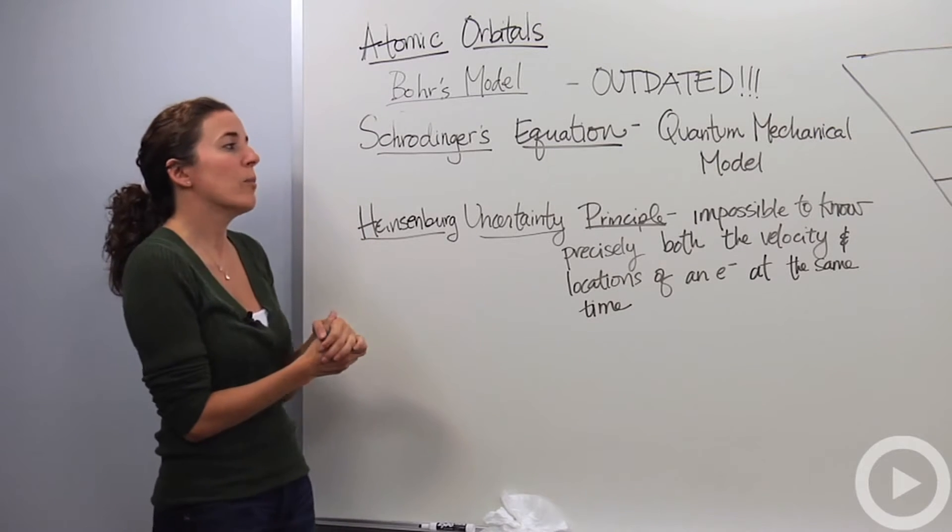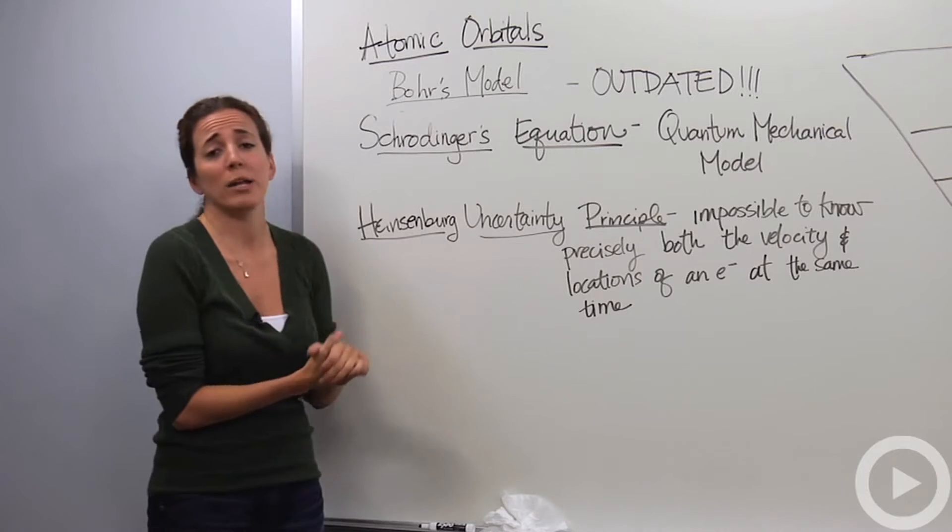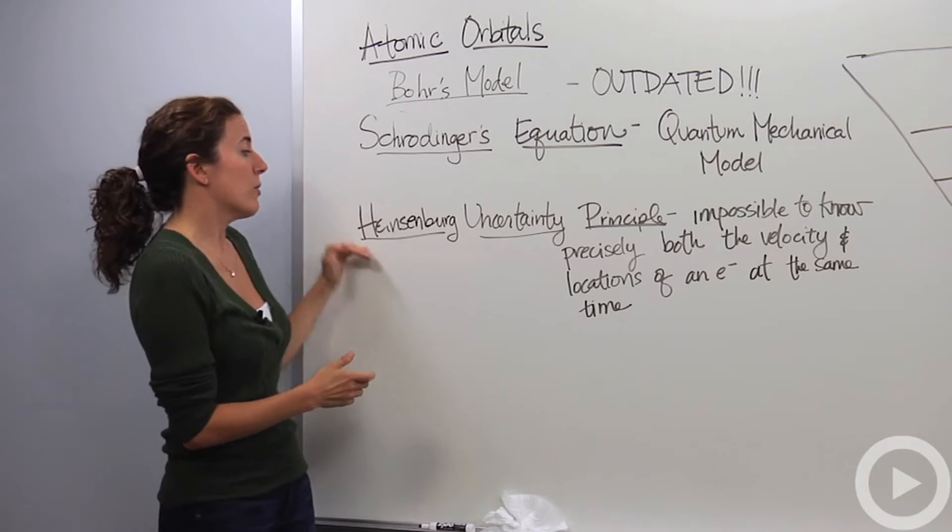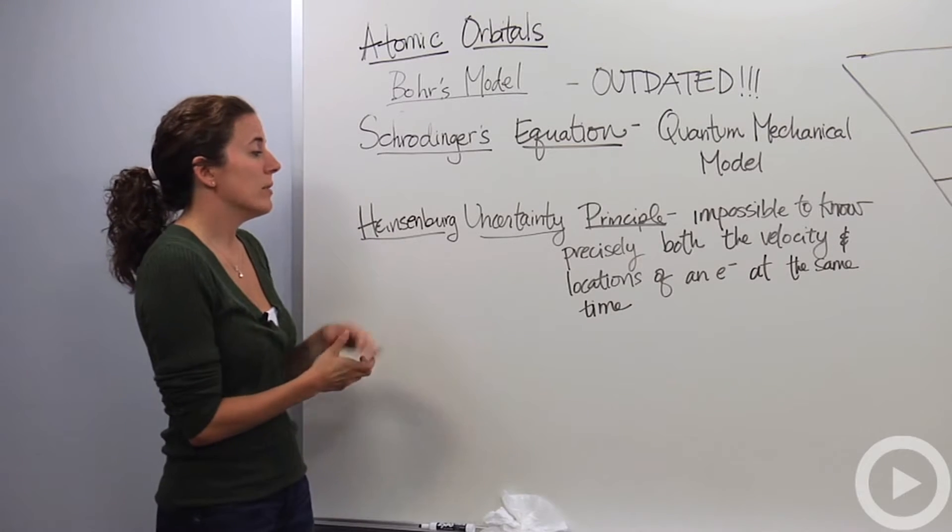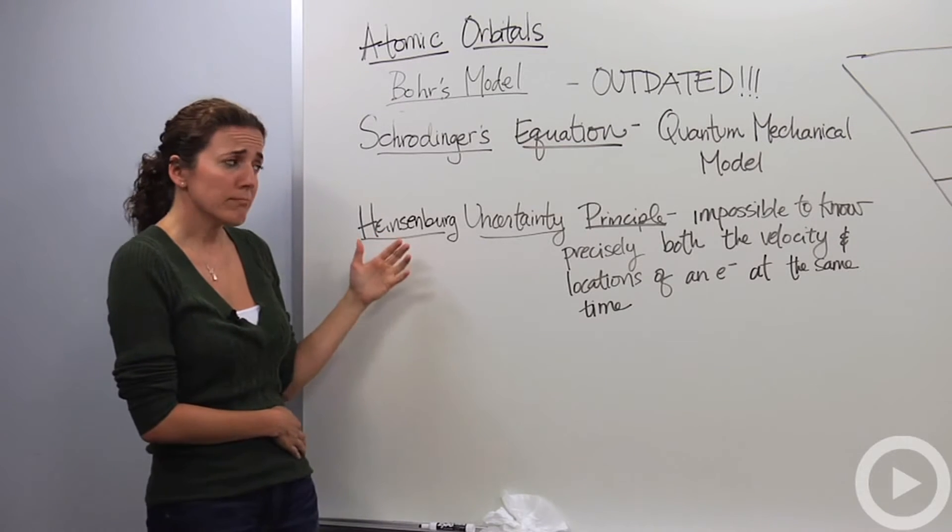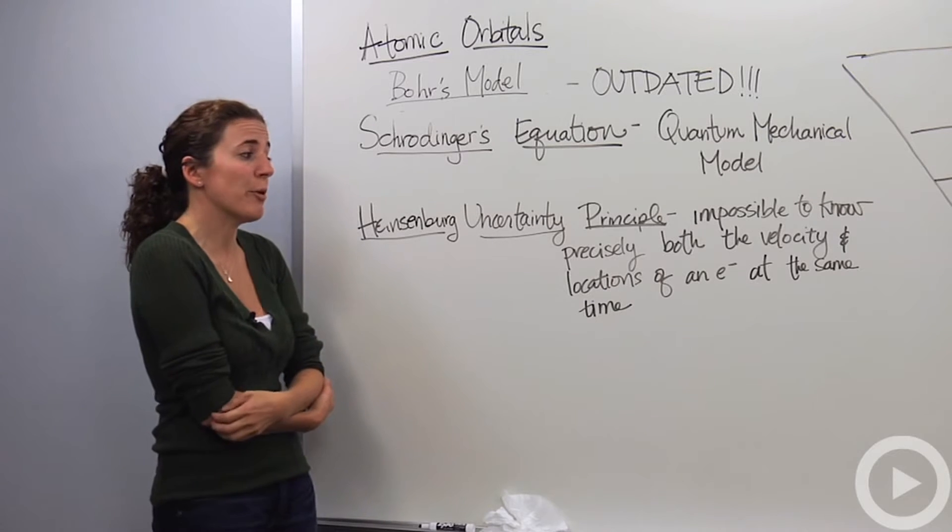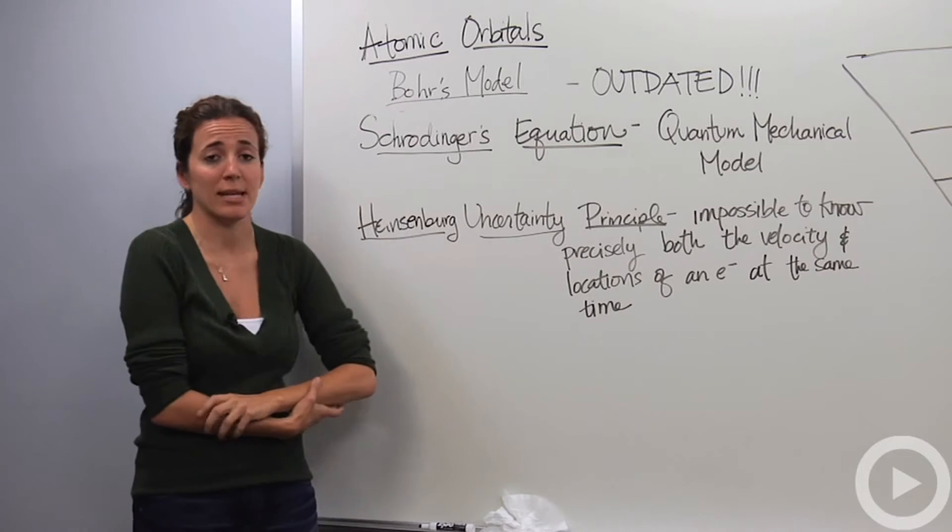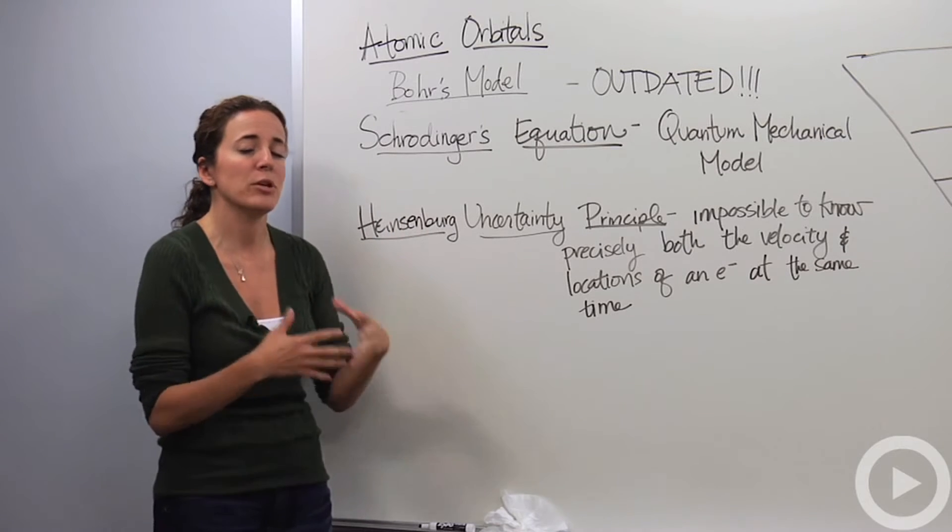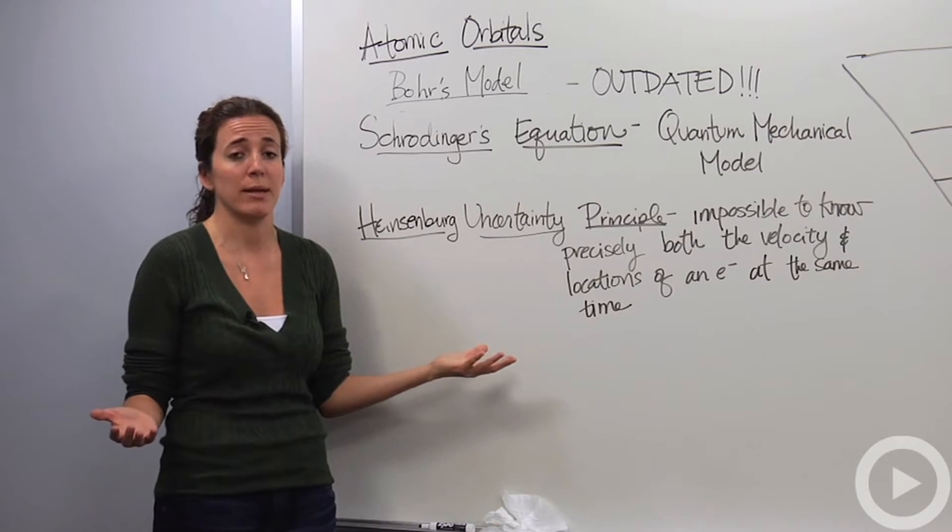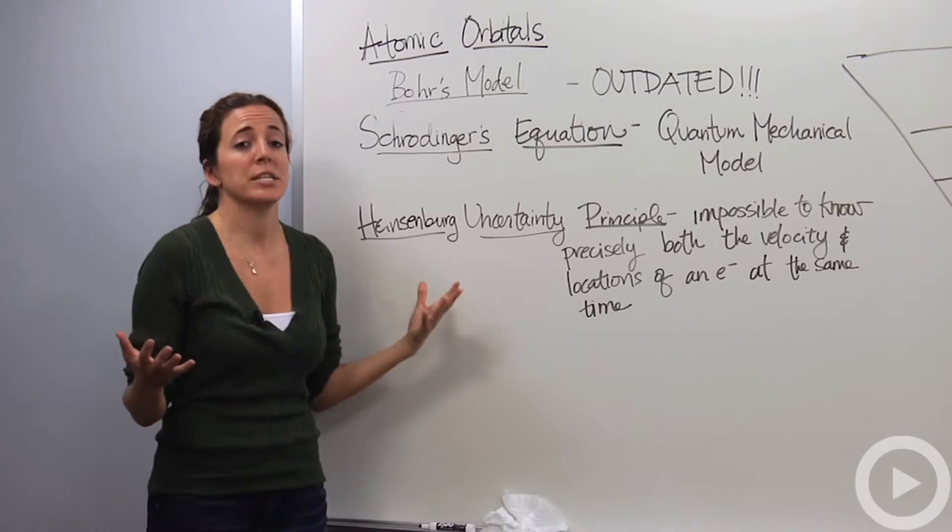So we're going to now use the more updated model, which is a quantum mechanical model. Schrodinger along with Heisenberg came up with a new idea of what an atom looks like. It's the one we use today. Heisenberg uncertainty principle states that it's impossible to know precisely both the velocity and locations of an electron at the same time. He along with Schrodinger calculated this huge mathematical idea of where an electron can be found, came up with this new idea of what an atom looks like.